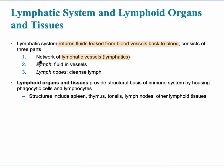The fluid found in those vessels is referred to as the lymph, which essentially is modified plasma. Also, along the lymphatic vessels, at strategic locations, there are small organs called lymph nodes.